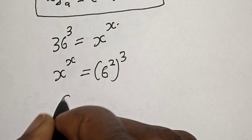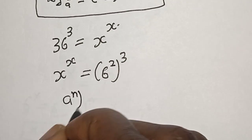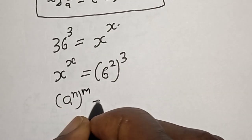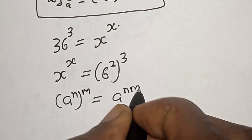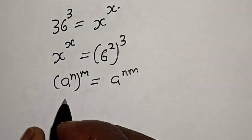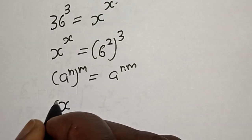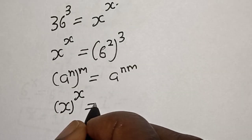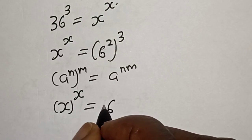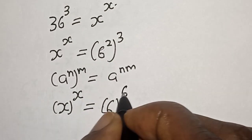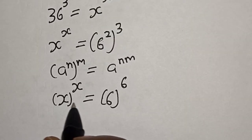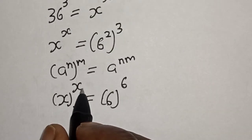Also take note of this rule: if you have a raised to power m raised to power n, this is equal to a raised to power nm. Then we have x raised to power x is equal to 6 raised to power 2 times 3, that is 6 raised to the 6th.